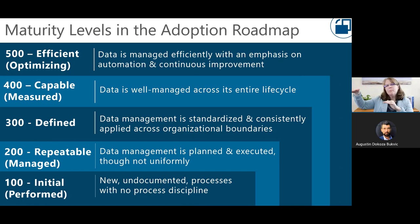Every article in the Adoption Roadmap includes examples for each individual topic showing what the levels might look like. They're very generic — you'll need to customize them for what makes sense for your organization and your situation.